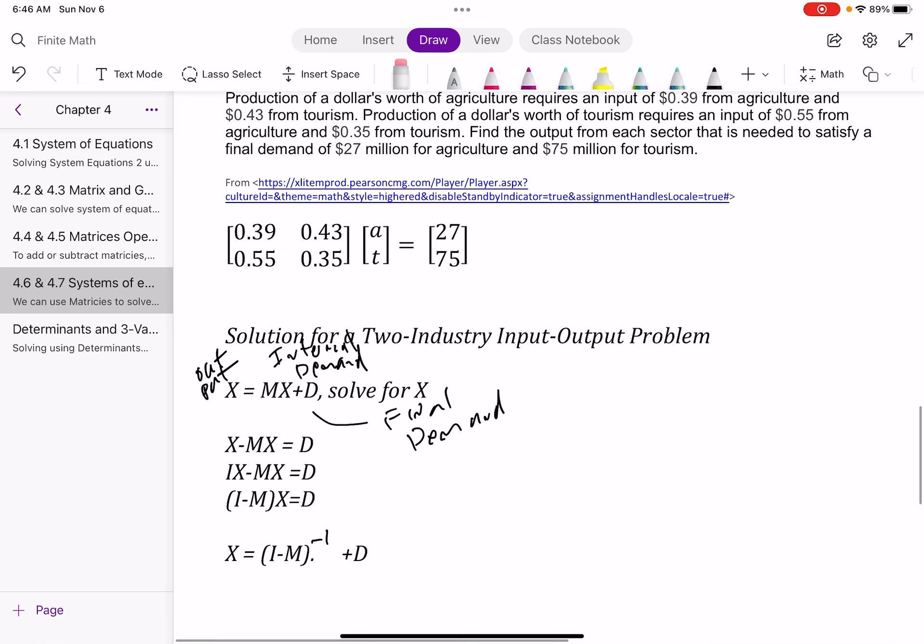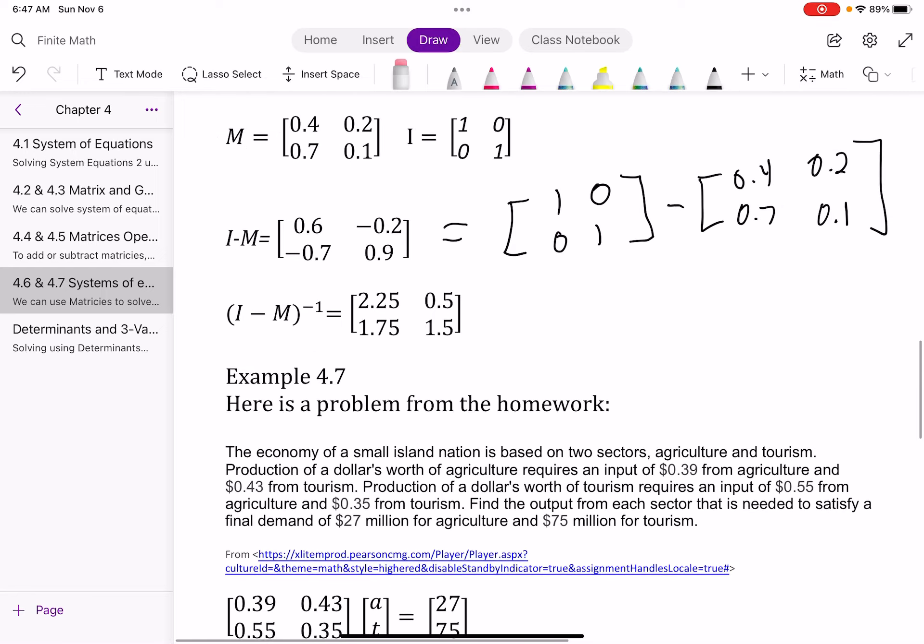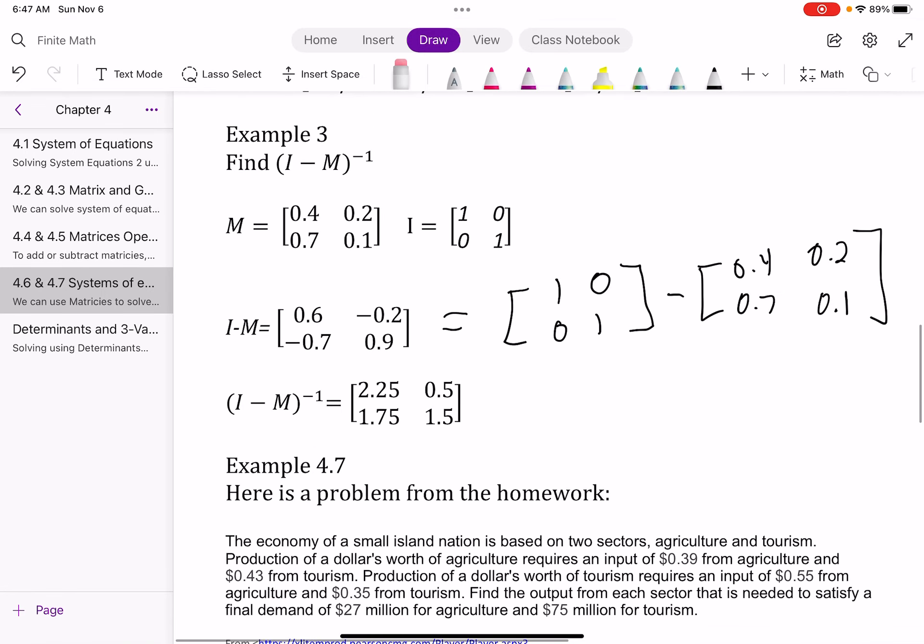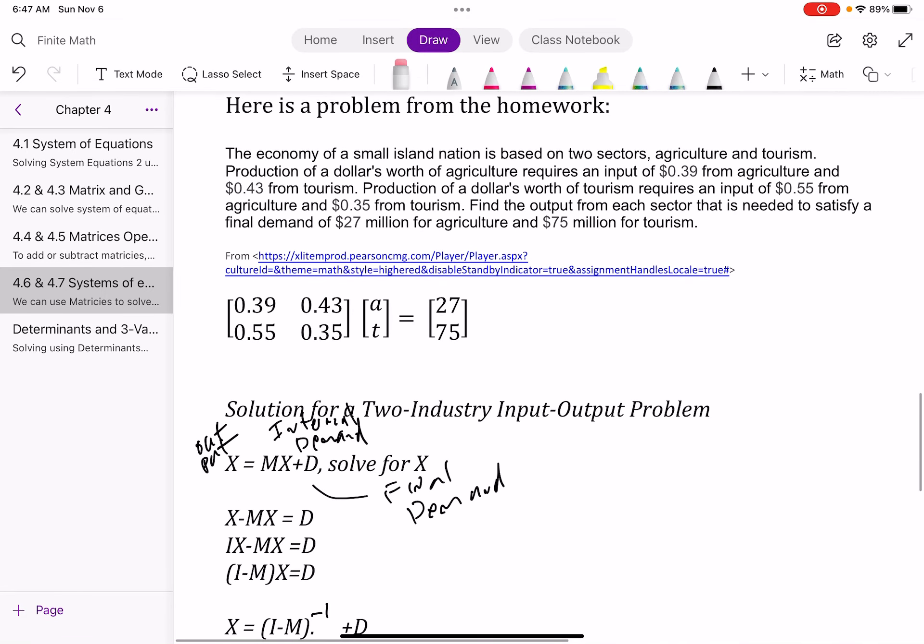Well, now we can do some algebra here. So X equals MX plus D. So I subtract MX. So I get X minus MX equals D. I can then pull out a X because it's a common factor, which gives me I minus MX equals D. And then when I move IM as a group to the side, that creates the inverse. So X equals I minus M inverse times D, which is what we just learned how to do up here in example 3. So that is the reason for it.